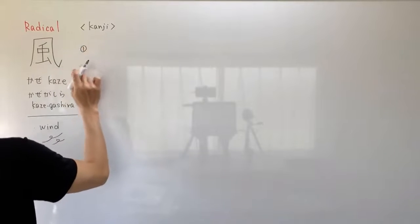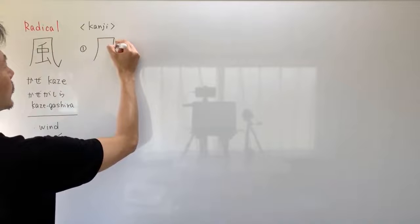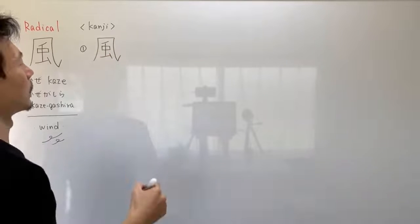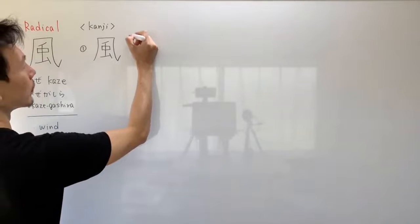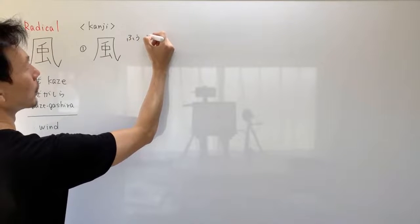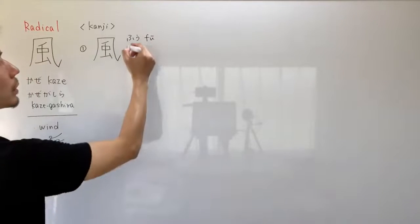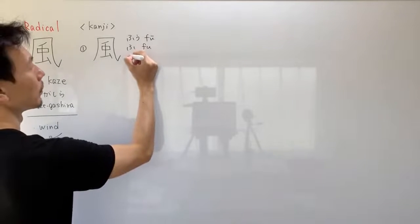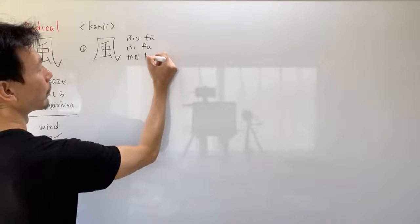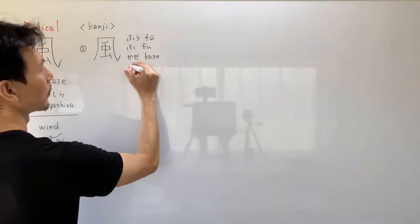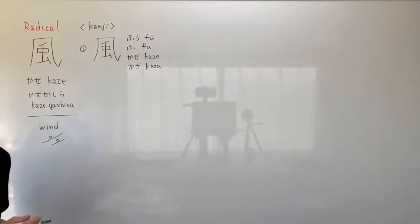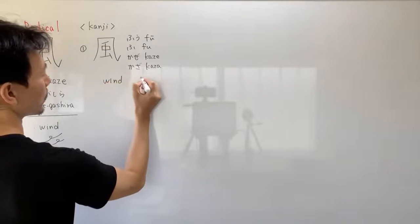Number 1 — the same character. The readings of this kanji include Kaze, and it means wind.